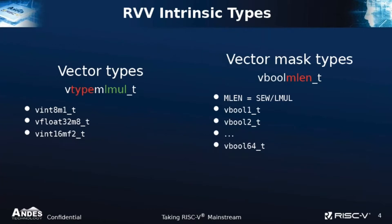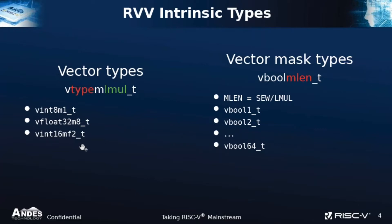In the proposal, there are two kinds of vector types. On the left-hand side, there are vector types written as v followed by the element type and underscore t. Here are some examples: the first one is an 8-bit integer with an LMUL of 1, or a single-precision floating point with an LMUL of 8. For the 0.9 version, there's support for fractional LMUL, and in that case we write it as mf2, which is 1 over 2 — so this is half of a vector register. The vector types are used to store the data you are computing with, and these are the primary types you will be using.